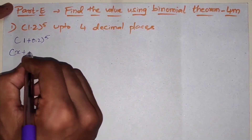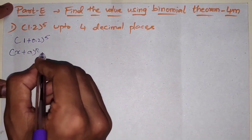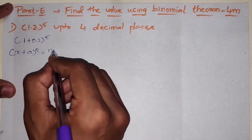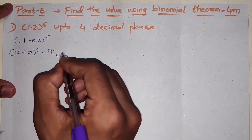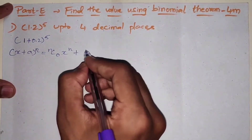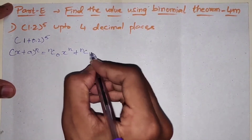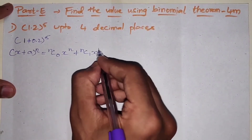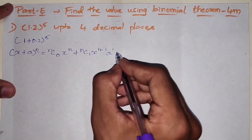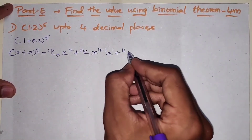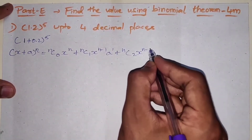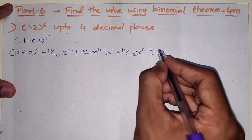The binomial expansion formula for (x + a) to the power of n is: nC0 times x to the power of n, plus nC1 times x to the power of n minus 1 times a to the power of 1, plus nC2 times x to the power of n minus 2 times a squared, and so on.